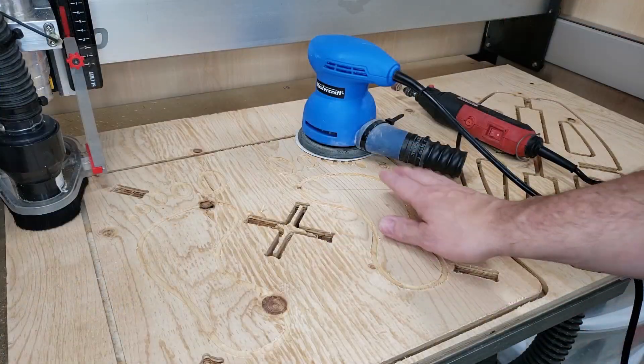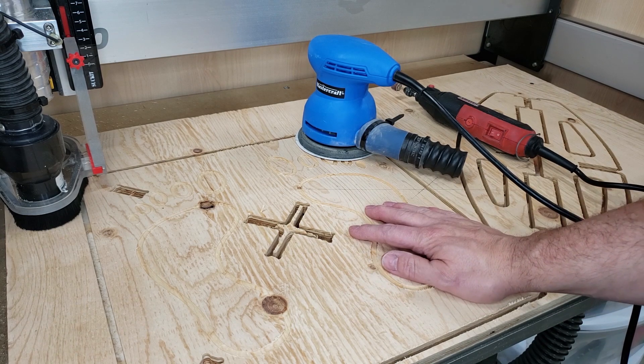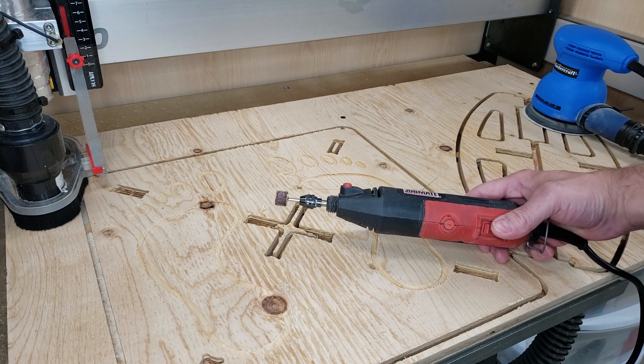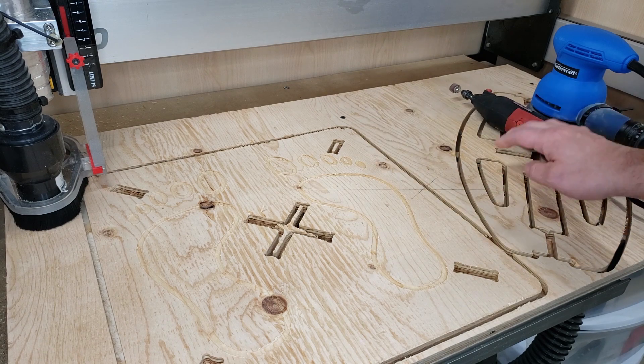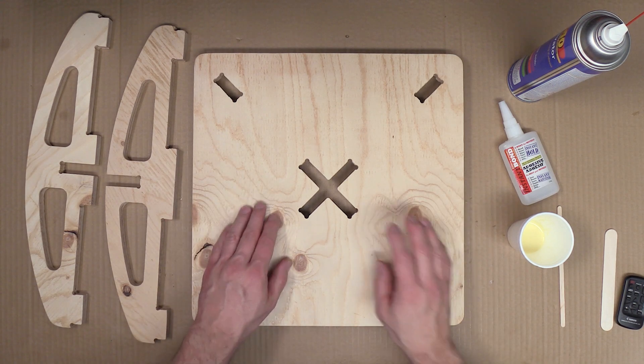Once I'm done cutting my project I'm going to go ahead and sand the whole project down using 220 grit on my orbital sander. I'll also be using my Dremel tool with a little fine grit drum bit attachment to get into any of these slots or other areas that I can't reach with the orbital sander.